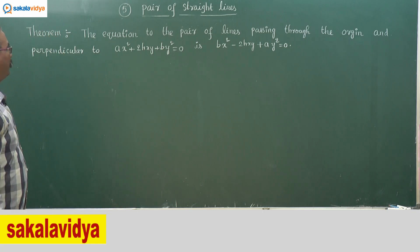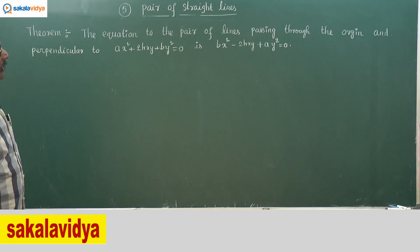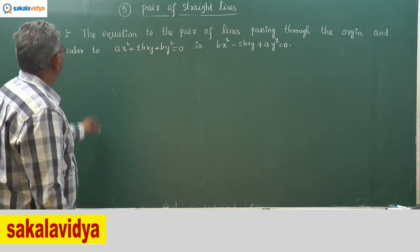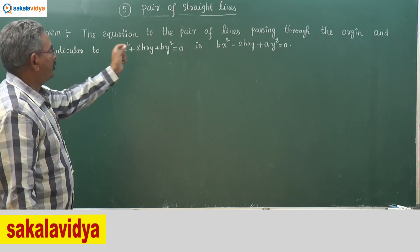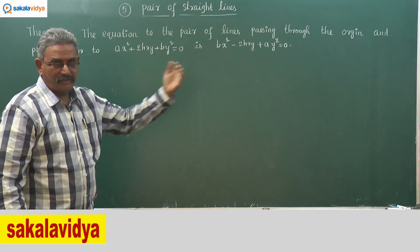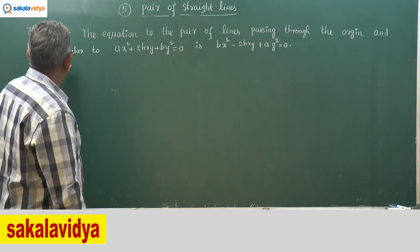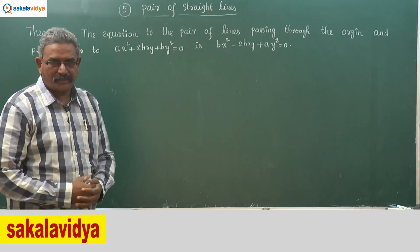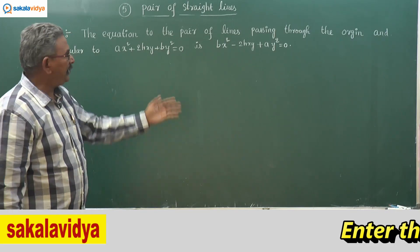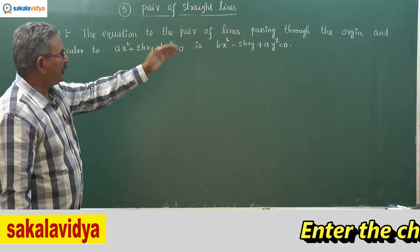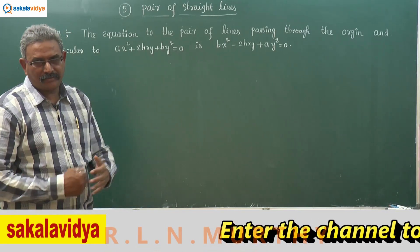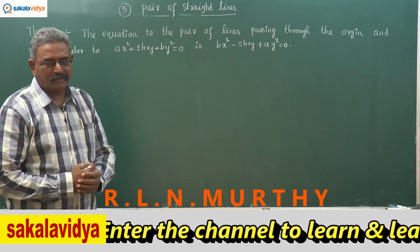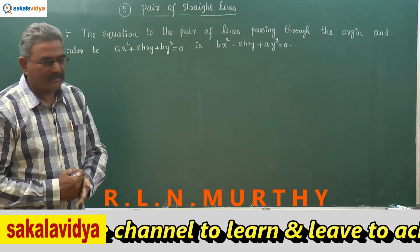Let us go through one more theorem. The equation to the pair of lines passing through the origin and perpendicular to Ax² + 2hxy + by² = 0 is bx² - 2hxy + ay² = 0. This is an important result for competitive examinations.